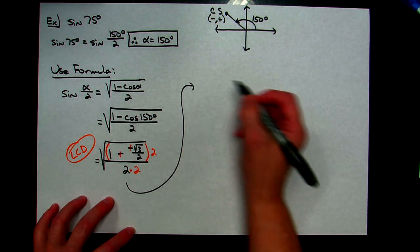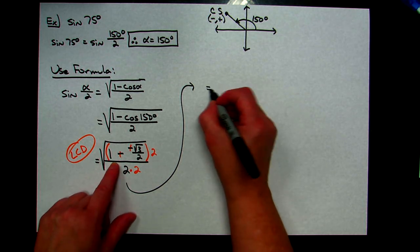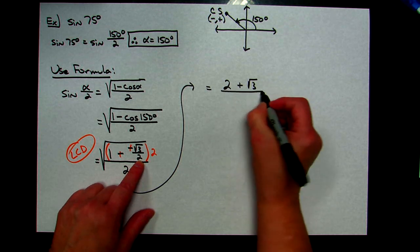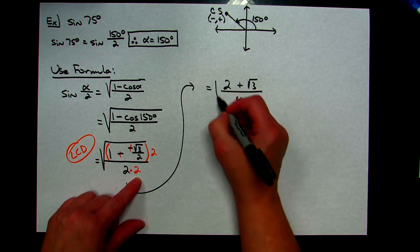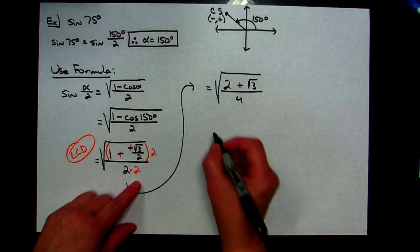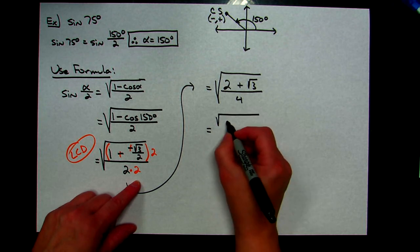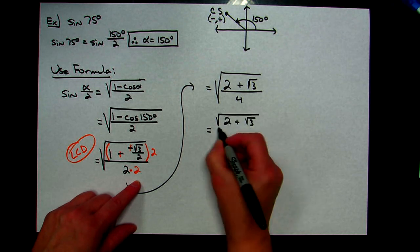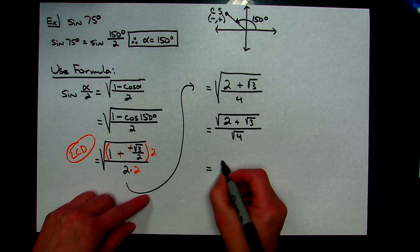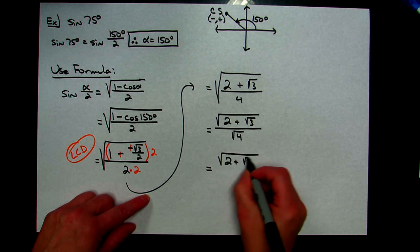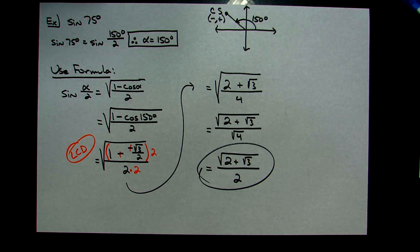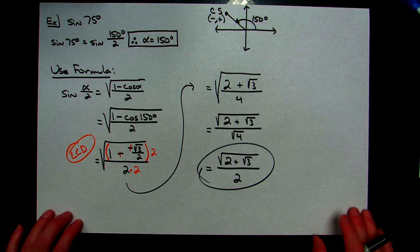Distributing the 2 in the numerator: 2 + √3, and the denominator becomes 4. I still have one large radical over the entire thing. Breaking that radical up: numerator becomes square root of (2 + √3) over square root of 4, and √4 simplifies to 2. The final answer is square root of (2 + √3) all over 2 — that's sine of 75° using half-angle formulas.